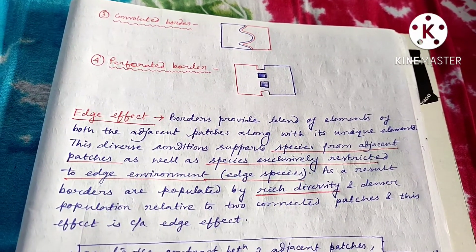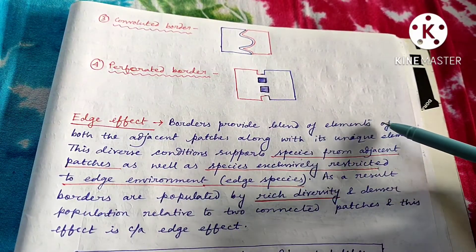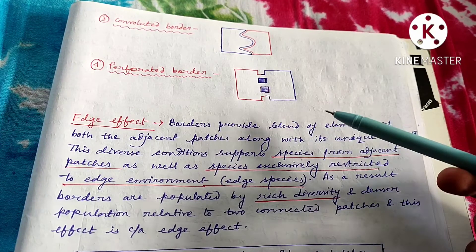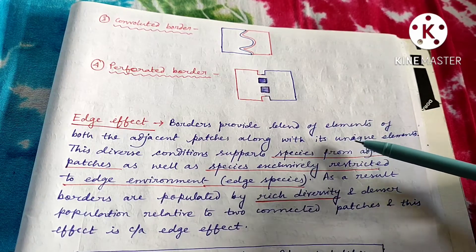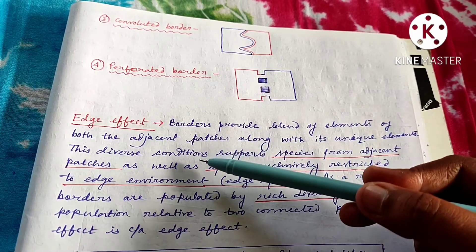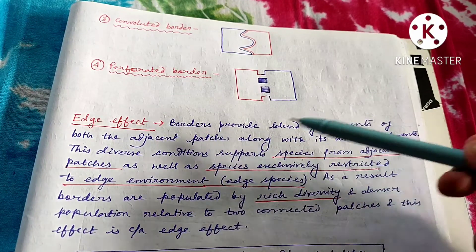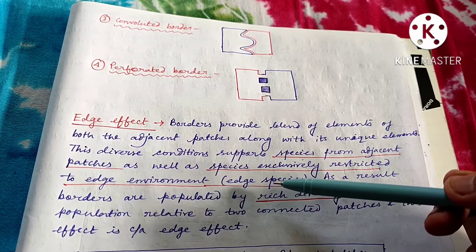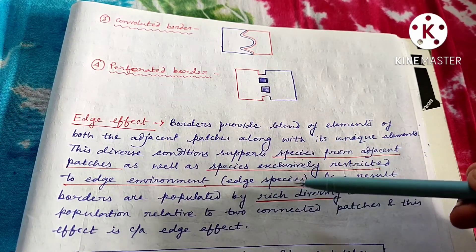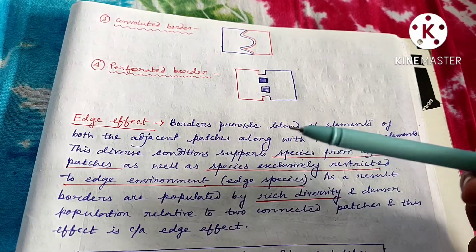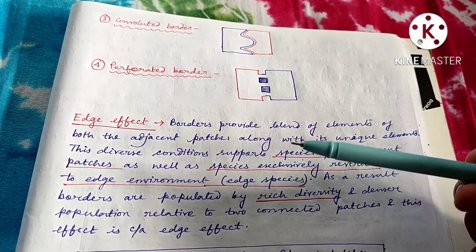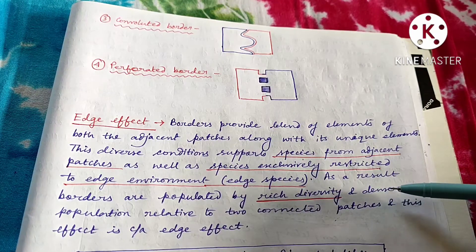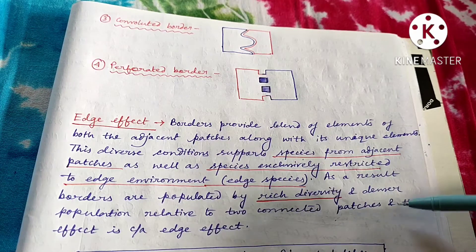Now, what is edge effect? The border provides a blend of elements from both adjacent patches, and along with that, there are also unique elements. So the border has three kinds of elements: elements from both adjacent patches plus its own unique elements. As a result, the diverse conditions support species from adjacent patches as well as species exclusively restricted to the edge environment — those are known as edge species.